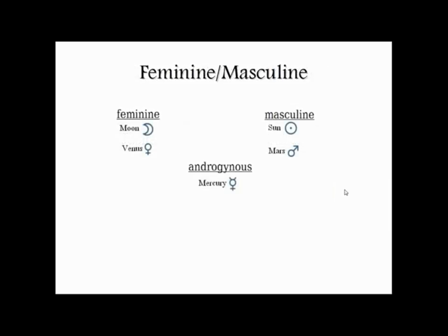There's something else to say about this grouping of planets beyond the division into masculine and feminine gender. These five planets — the Sun, the Moon, Venus, Mars, and Mercury — are what are sometimes collectively known as the personal planets.